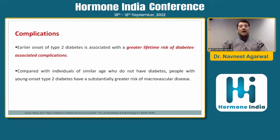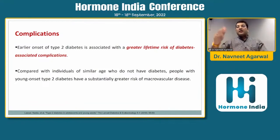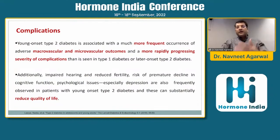Complications seen in early-onset diabetes are associated with a greater lifetime risk because these patients live long with the disease. A patient who develops diabetes at 27 to 29 years with a life expectancy of 80 years will live with diabetes for almost 50 years, increasing the chances of complications. Young-onset type 2 diabetes also shows more frequent macrovascular and microvascular outcomes, progressing severity of complications, impaired hearing, reduced fertility, risk of premature cognitive decline, and psychological issues — all of which substantially reduce quality of life.